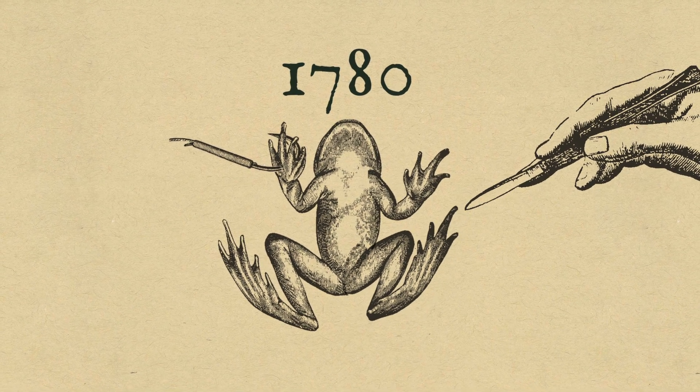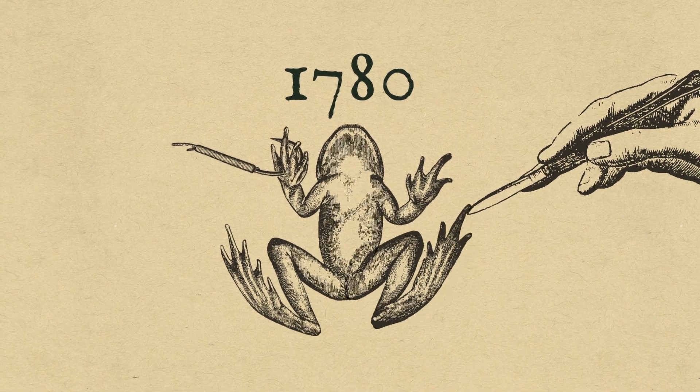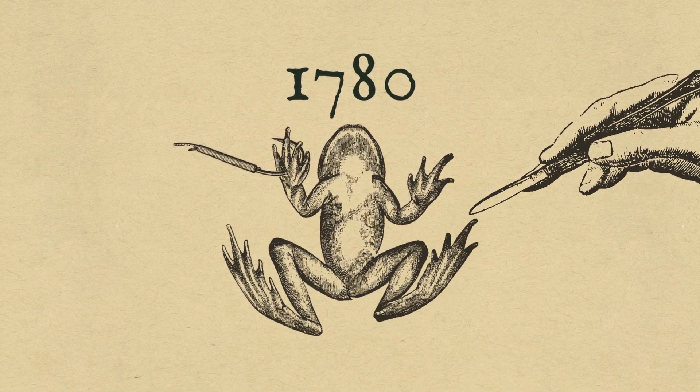Galvani believed that the twitching was caused by energy in the leg itself. However, his fellow scientist, Alessandro Volta, theorized that the contractions were caused by the two different metals soaked in a liquid.